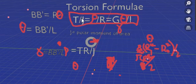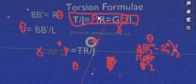Which is T over J equals the shear stress divided by R, which equals the shear modulus times theta divided by L, hence the famously known torsion formula.